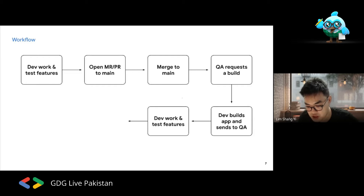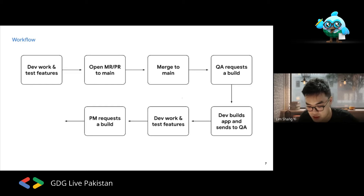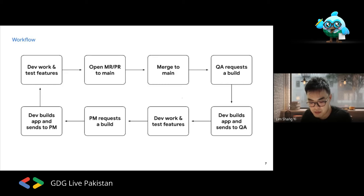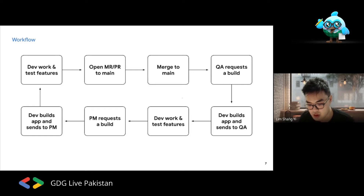After the developer finishes building and sends the app to QA, they continue working on current or new features. But throughout the day, others come requesting different builds. Maybe the project manager wants to demo a feature to a client and needs you to quickly build it. Now you need to stop your work and build, and you continue this cycle every day — QA and the product manager keep requesting builds, causing constant disruption.